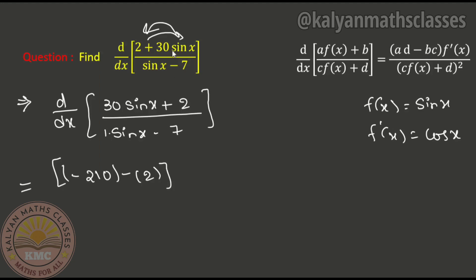Next, f(x) is sin x, so the derivative f'(x) is cos x. Upon [sin x - 7] squared. So the answer is -212 cos x upon [sin x - 7]².